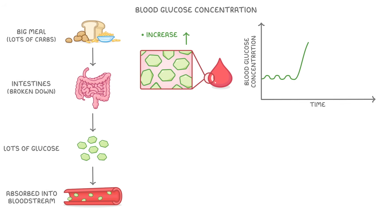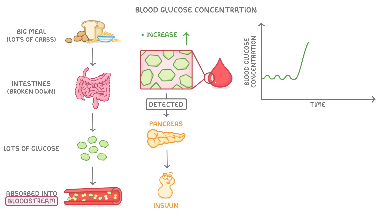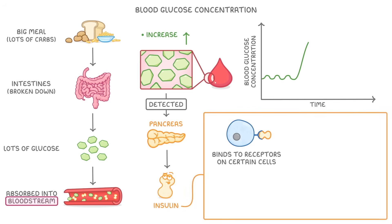This rise in glucose levels will be detected by your pancreas, which is an organ that sits just behind the stomach. And in response, it will release a hormone called insulin into your bloodstream. As it's travelling around the body, the insulin will bind to receptors on certain cells, which tells those cells to take in some of the glucose that's floating around in your blood.